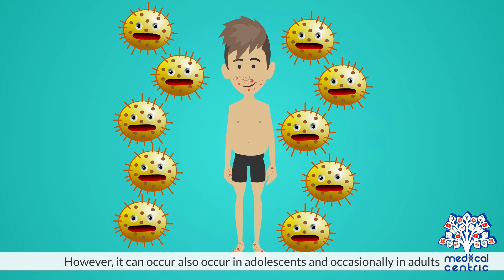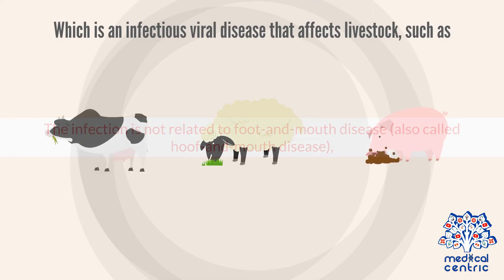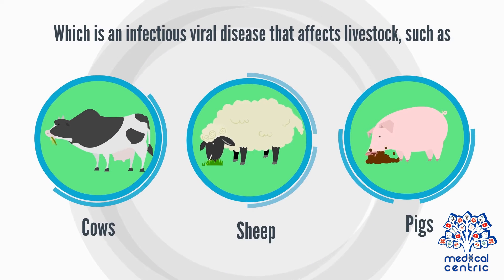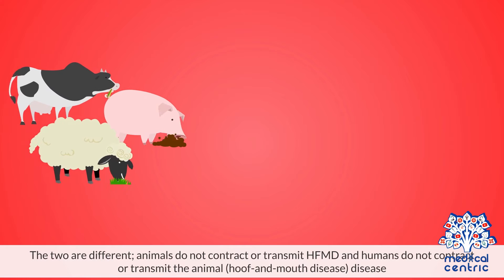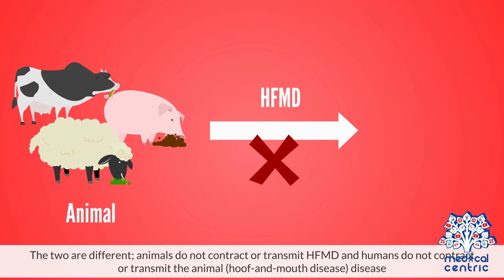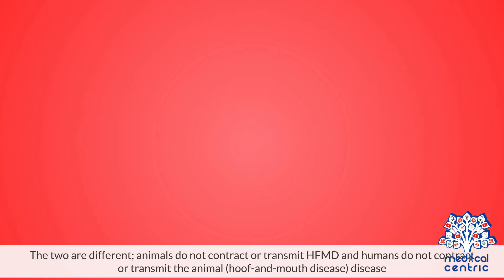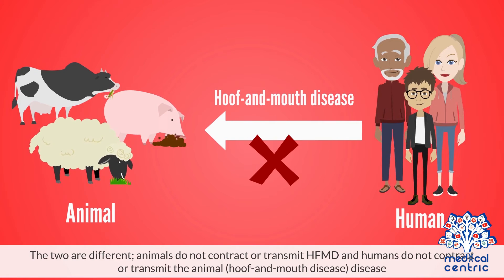However, it can also occur in adolescents and occasionally in adults. The infection is not related to foot and mouth disease, also called hoof and mouth disease, which is an infectious viral disease that affects livestock, such as cows, sheep and pigs. The two are different — animals do not contract or transmit HFMD, and humans do not contract or transmit the animal hoof and mouth disease.